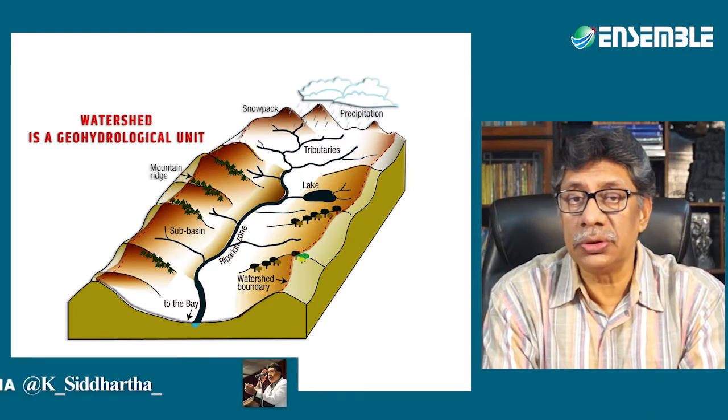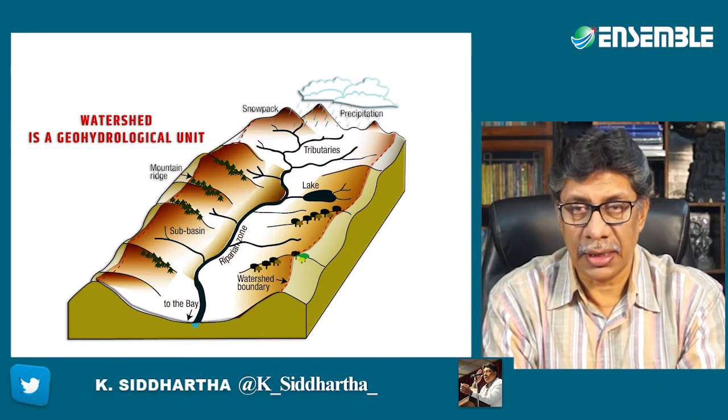Watershed is different from water divide. Watershed is a geo-hydrological unit comprising all land and water within the confines of a drainage divide. It refers to a ridge-to-valley approach, unlike a water divide which is ridge-to-ridge. A watershed is also the area across or under which water flows on its way to lakes, rivers, streams, and groundwater, draining to the lowest point — usually a lake, stream, pond, or river. Watersheds are the catchment areas of small rivers, lakes, or tanks, and are generally less than 1000 hectares in area.